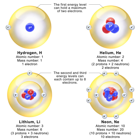In atomic physics, the Rutherford-Bohr model, or Bohr model, or Bohr diagram, presented by Niels Bohr and Ernest Rutherford in 1913, is a system consisting of a small, dense nucleus surrounded by revolving electrons—similar to the structure of the solar system, but with attraction provided by electrostatic forces rather than gravity.